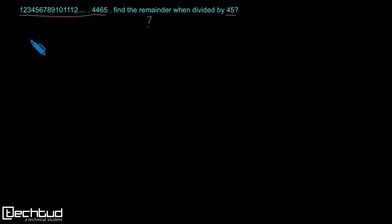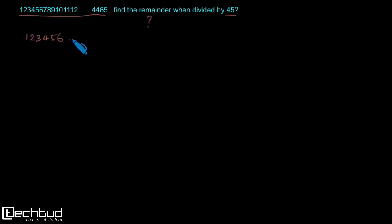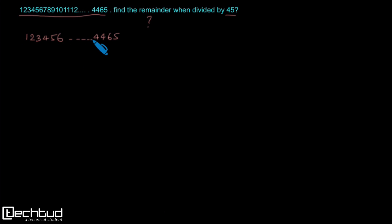If you notice the number, it has some kind of pattern. You can see the number is 1 followed by 2, 3, 4, 5, 6 and so on, going up to 44. And then finally we have one out-of-pattern number which is 65. This whole thing makes our number which has to be divided by 45 and we have to identify the remainder.